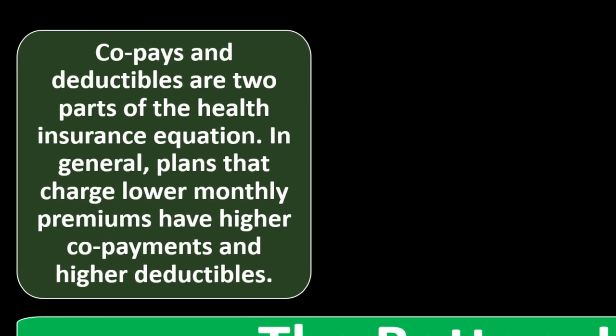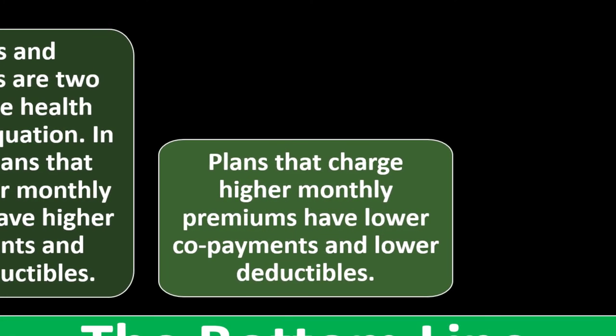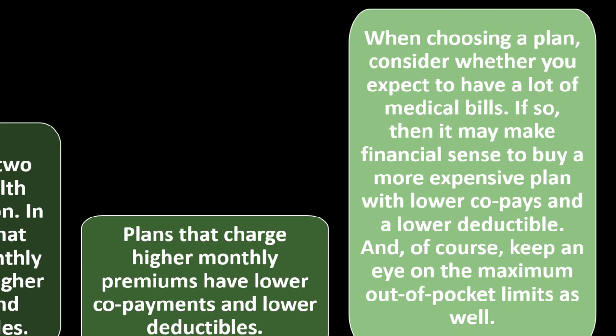What's the bottom line? Co-pays and deductibles are two parts of the health insurance equation. In general, plans that charge lower monthly premiums have higher co-payments and higher deductibles. Plans that charge higher monthly premiums have lower co-payments and lower deductibles. When choosing a plan, consider whether you expect to have a lot of medical bills. If so, it may make financial sense to buy a more expensive plan with lower co-payments and a lower deductible. Keep an eye on the maximum out-of-pocket limits as well.